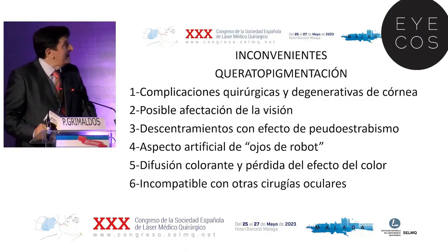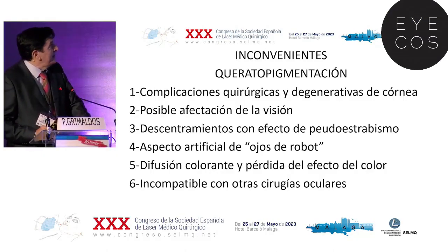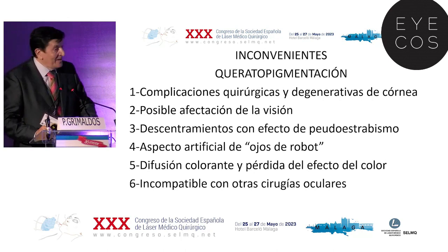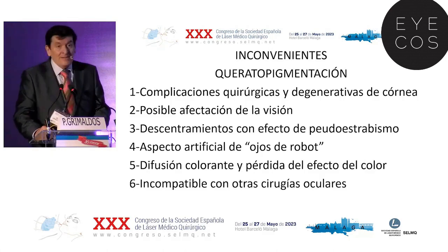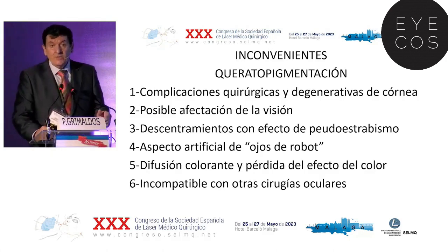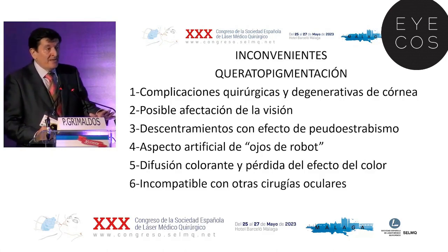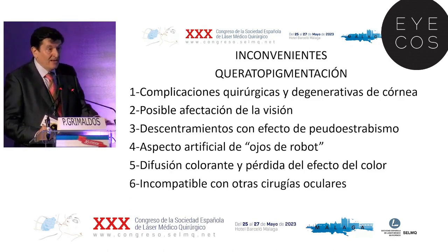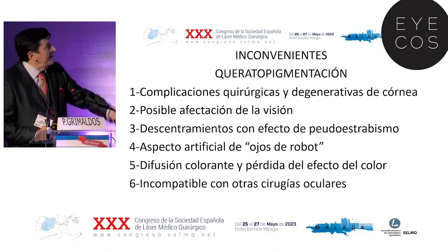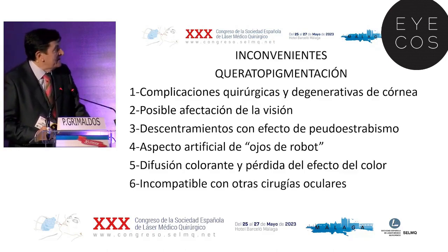Disadvantages of keratopigmentation: it is a surgery, and it can present surgical and degenerative complications of the cornea. It can affect vision due to surgical complications and the induction of irregular astigmatism. We are creating tunnels in the cornea and we can deform the anterior surface of the cornea, creating an irregular astigmatism.